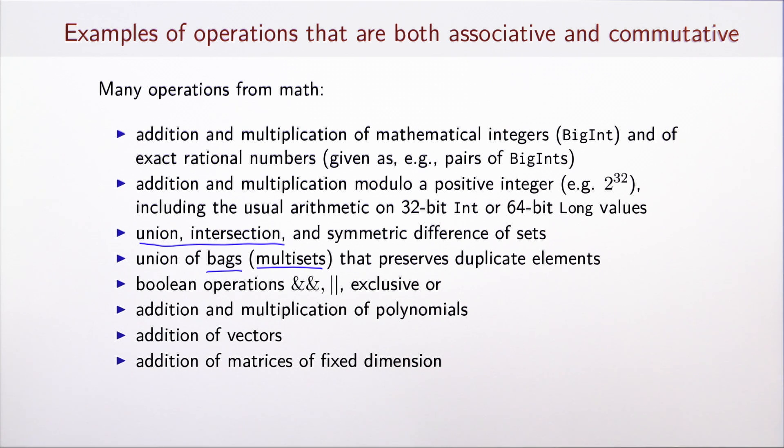Furthermore, operations on structured objects such as polynomials have also commutative and associative addition and multiplication. Addition of vectors is furthermore associative and commutative, and so is addition of matrices of some fixed dimension.